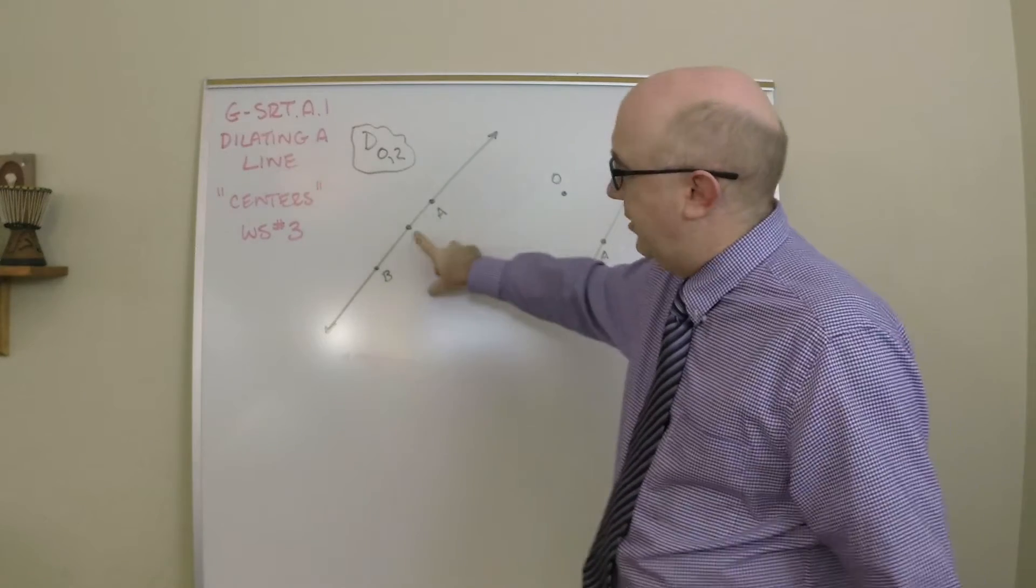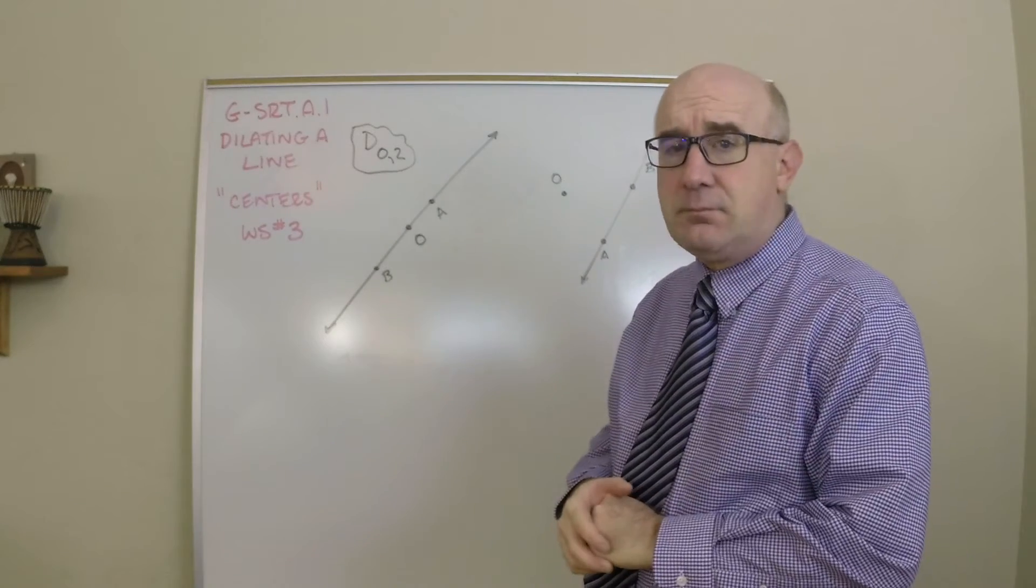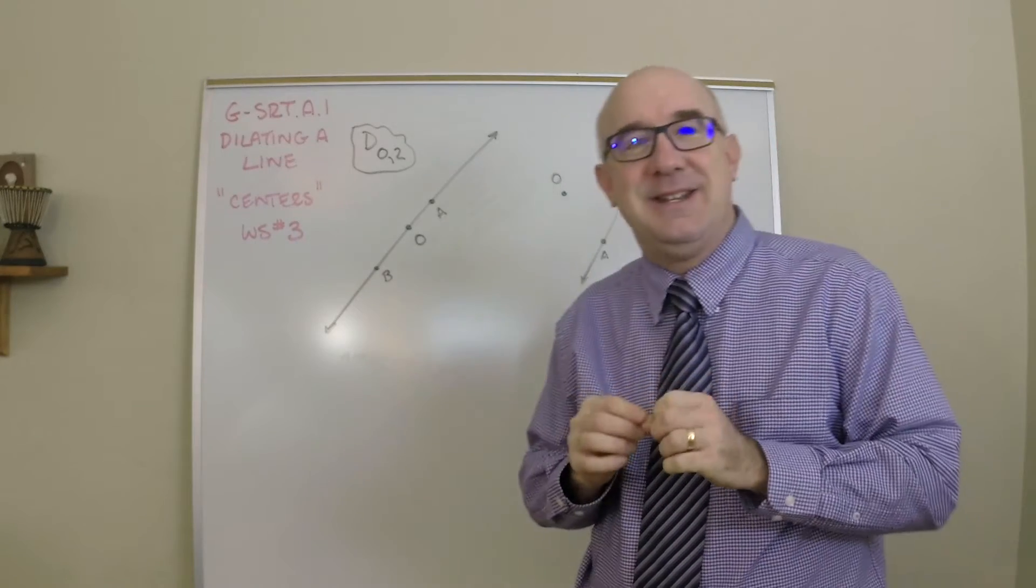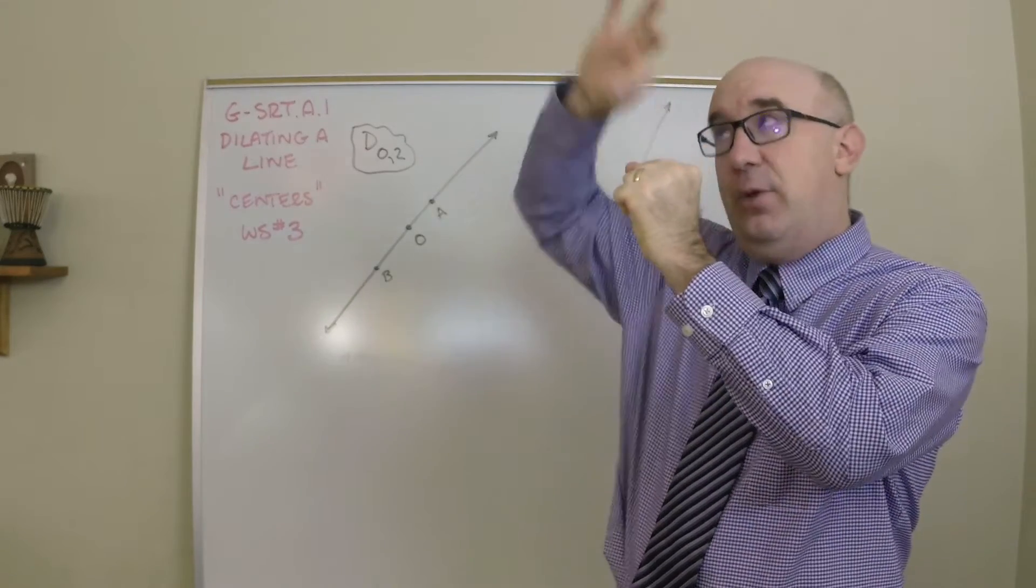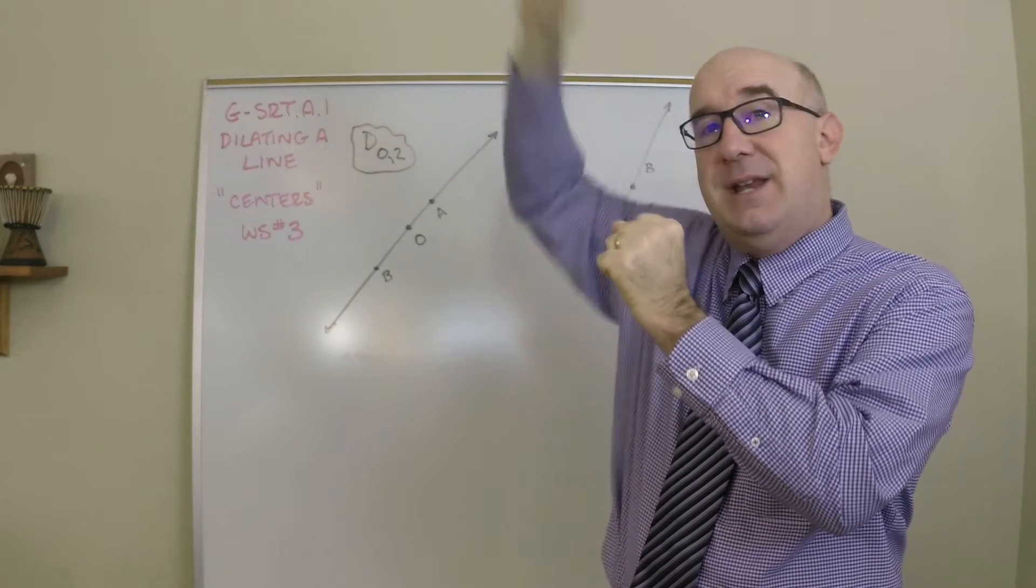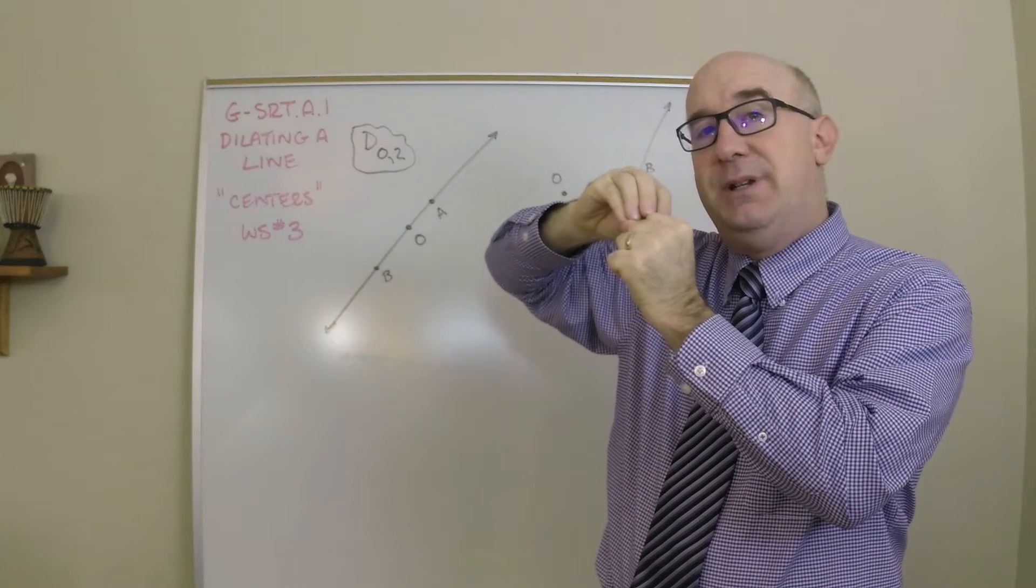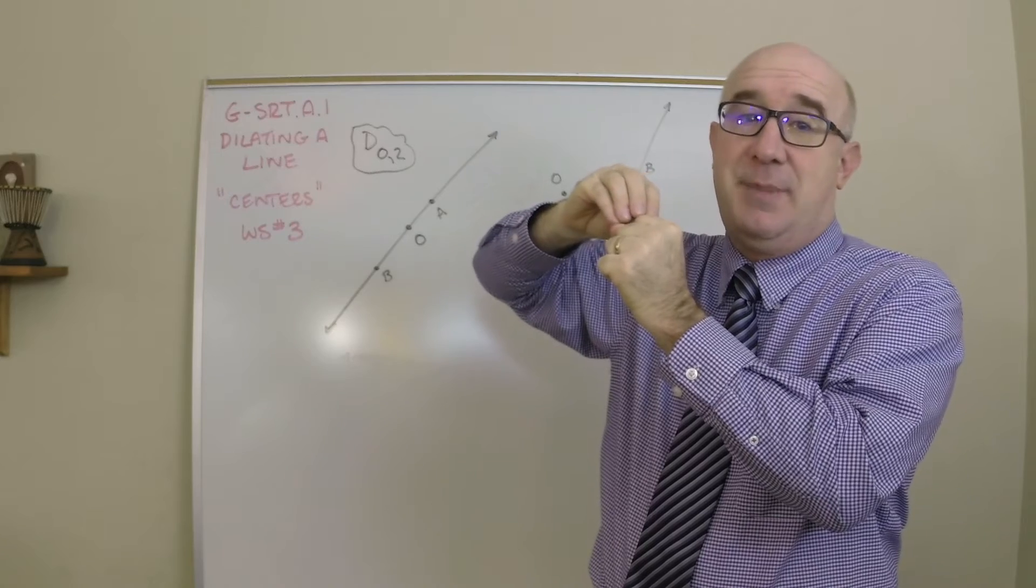If the center was on a line, remember how dilations work - you have a center and then the rays that leave from that center. As we dilate either by an enlargement or an expansion,